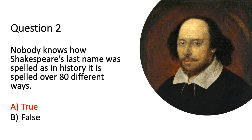Question two was a true or false: nobody knows how Shakespeare's last name was spelled, as in history it is spelled over 80 different ways. That was actually true. It is spelled over 80 different ways, such as 'Shappier' and 'Shaksberg.' In his own signatures, he even wrote variations such as 'William Sheik.' So nobody knows exactly how it was spelled.